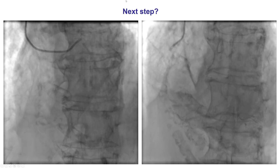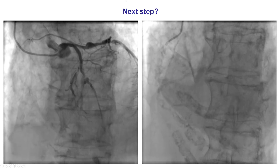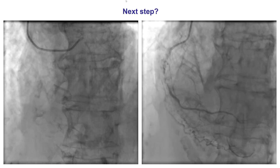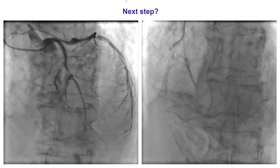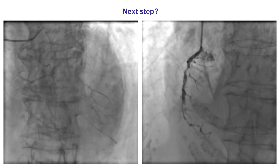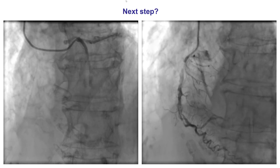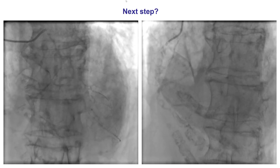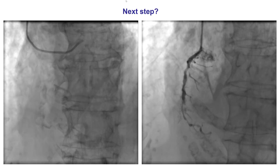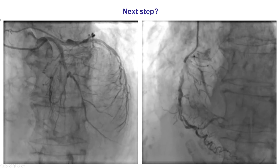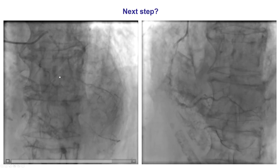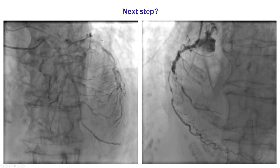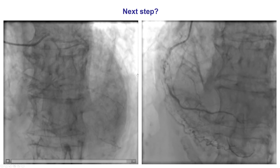There was a discussion with cardiac surgery given the patient's multivessel disease, as well as the referring provider given her age and comorbidities. She had severe COPD and was not deemed a surgical candidate. Therefore, the plan was made to attempt PCI of the culprit lesion. The culprit was considered to be the mid LAD given its ulcerated appearance, whereas the RCA was a CTO and the circumflex did not appear to be acute.